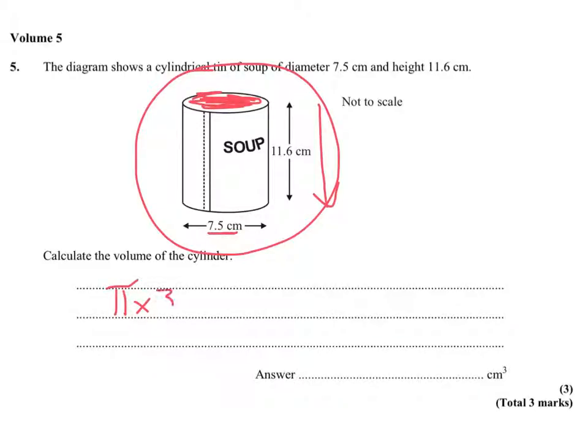now we're given a diameter, so we need to halve that, 3.75. Don't forget to square it, and then times by the height or the length, whichever way you're looking at it.